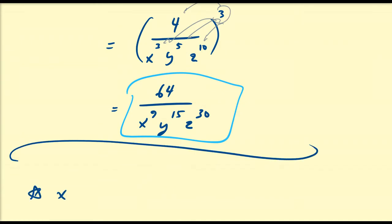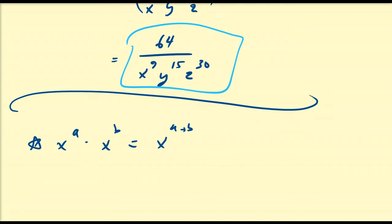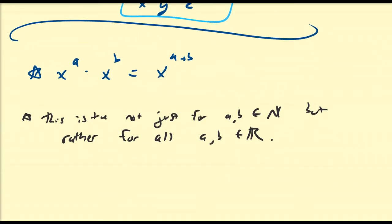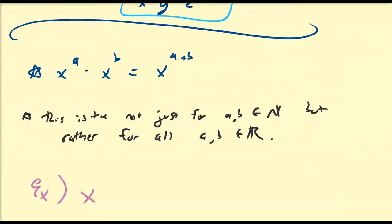Now, all these properties — for example, x^a times x^b equals x^(a+b) — are very easy to prove for natural numbers. But there is a very important property: this is true not just for a, b in the natural numbers, but for all a, b in the real numbers. So for example, you can have x^(1/2) times x^(1/3), and using this rule that's just x^(1/2 + 1/3), or x^(5/6).